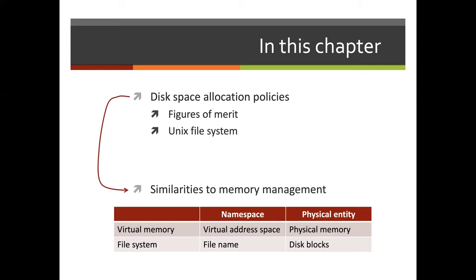Let's consider the namespaces and physical entities that we associate with memory and file systems. For virtual memory, we have a virtual address space, but correspondingly for file systems, we have a file name. For physical entities, we have a physical memory block used to store our data, and for file systems, we'll discuss a disk block. This helps us understand the role and mechanisms that enable file systems to integrate and store information in our computer systems.